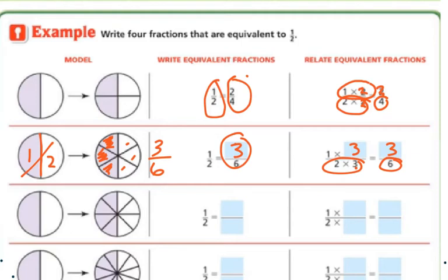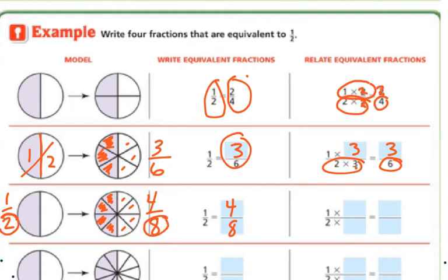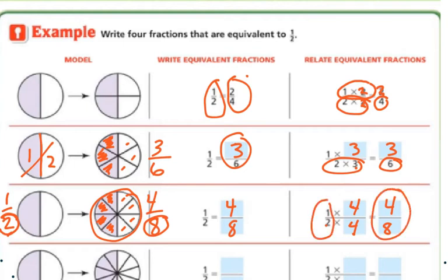Again, I've got 1/2 over here, but now I've broken it into 8 parts on the bottom. Of the shaded, I have 4. So 1/2 equals 4/8. The way I did this: what does it take to make 2 become 8? Well, 2 times 4 is 8. So if I multiply the bottom by 4, I get 8. Whatever I do to the bottom, I have to do to the top — so I multiply the top by 4 as well. 1 times 4 is 4. So 1/2 is equivalent to 4/8.